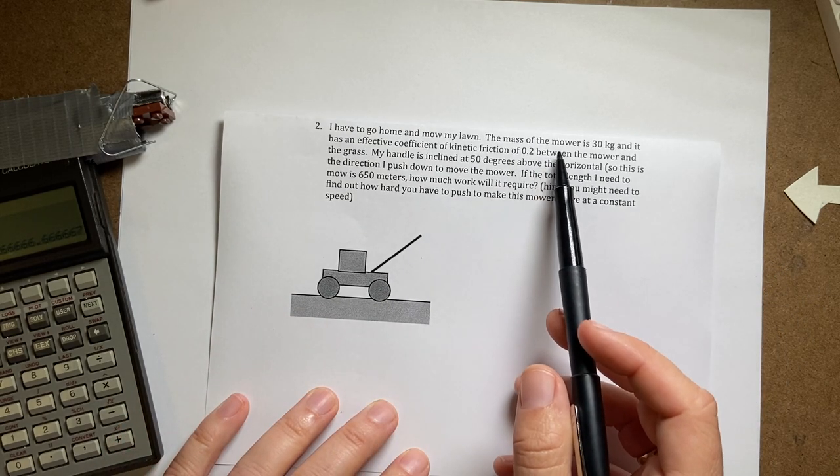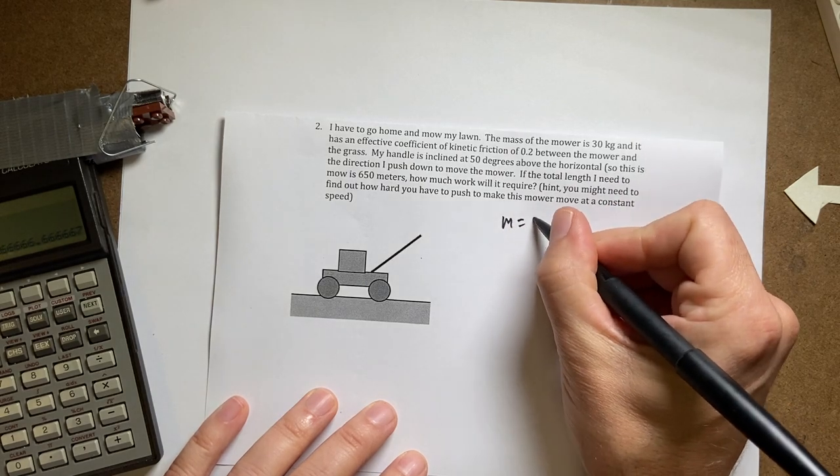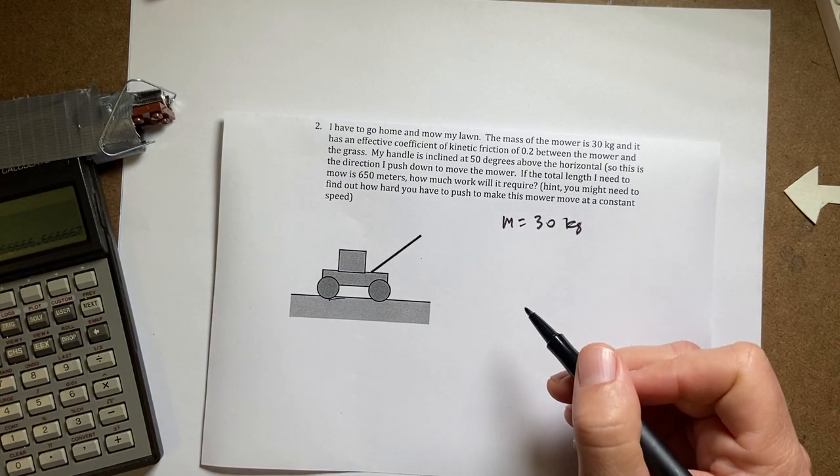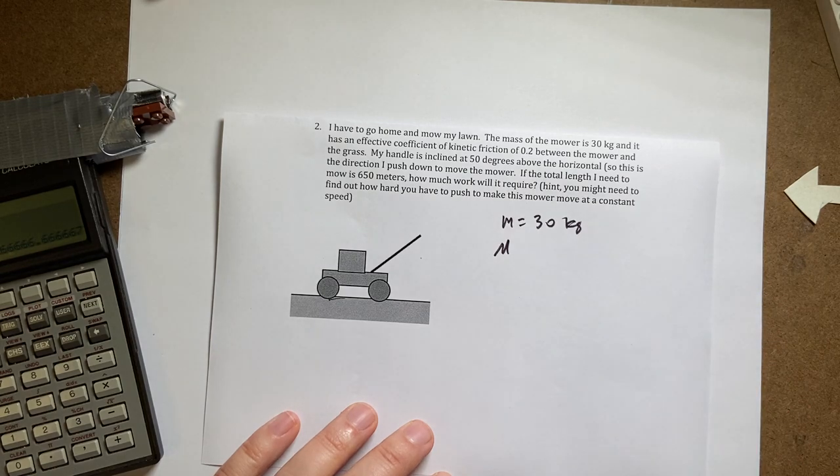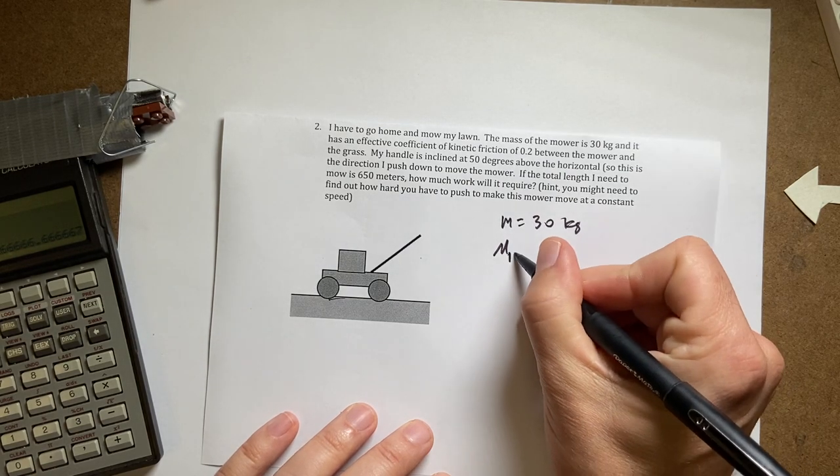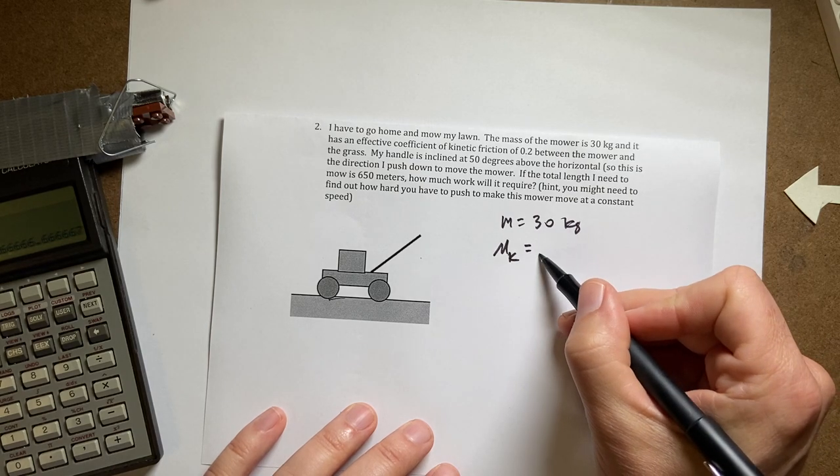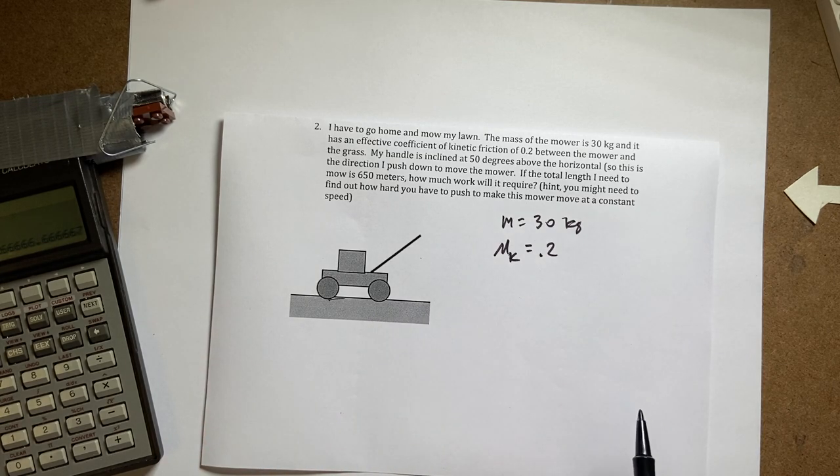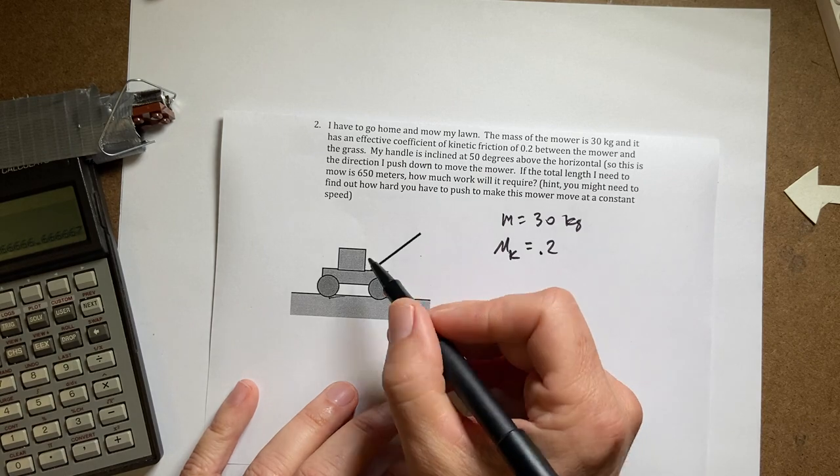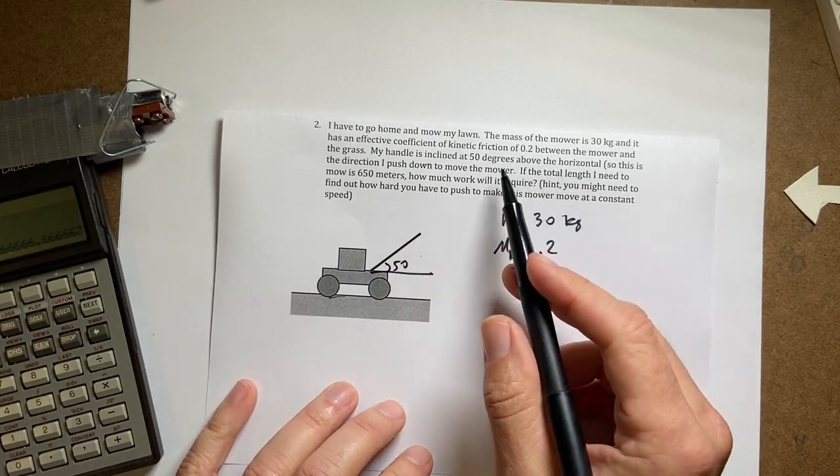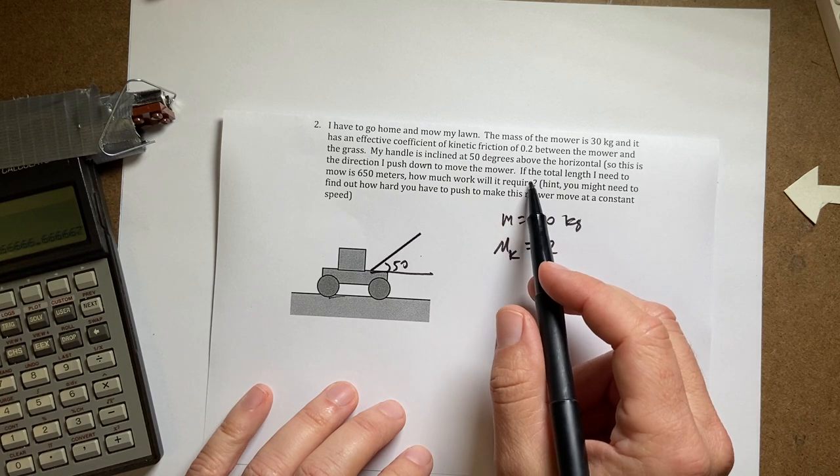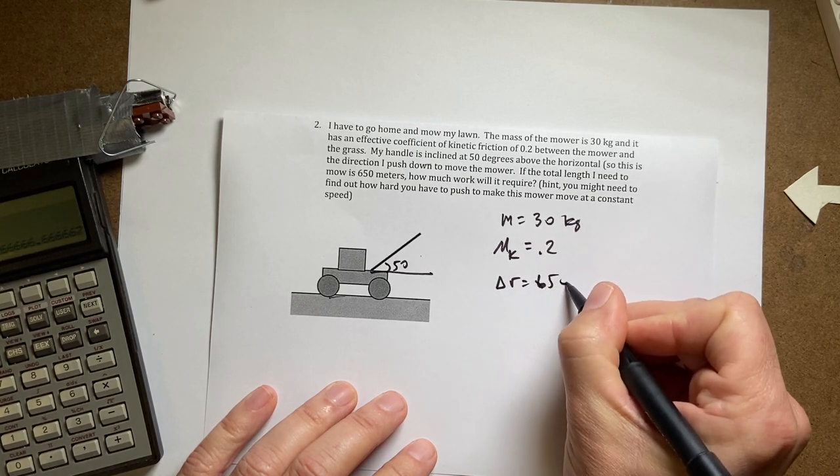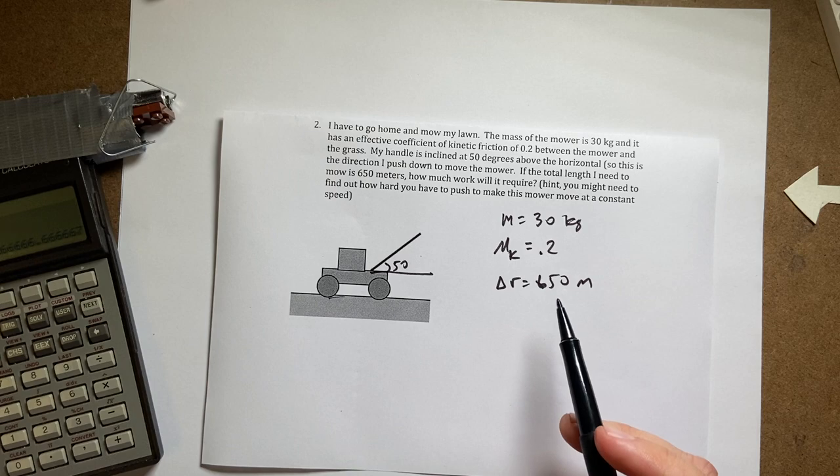And the lawnmower has a mass of 30 kilograms. And there's a coefficient of friction of 0.2 between the wheels and the grass. This is actually, I think, there might be, this might be an unsolvable problem. I can't remember. I do remember writing this. So let's say there's kinetic friction. It's not actually kinetic friction because the wheels are rolling, but I think it's still a valid thing. The handle is inclined 50 degrees above the horizontal. And the total length I need to mow is 650 meters. So delta R is 650. That's actually pretty far. But I think I might have actually measured that in real life.